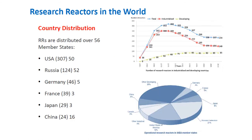In terms of country distribution, most operating research reactors are found in industrialized countries, but there is an increasing trend in developing countries. Research reactors are distributed over 56 member states. The USA leads with 307 total and 50 planned. Russia has 124 with 52 planned. Germany has 46 with 5 planned. France has 39 with 3 planned. Japan has 29 with 3 planned. China has 24 with 16 planned.